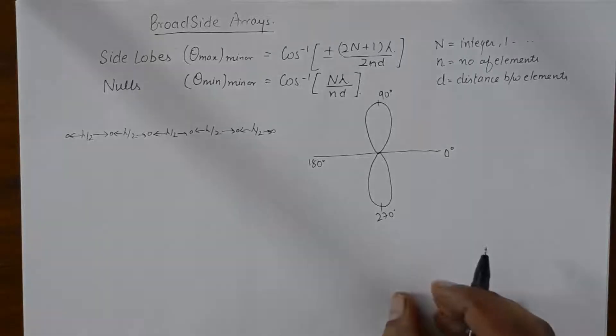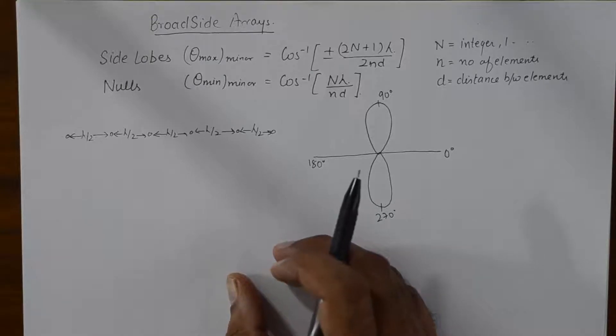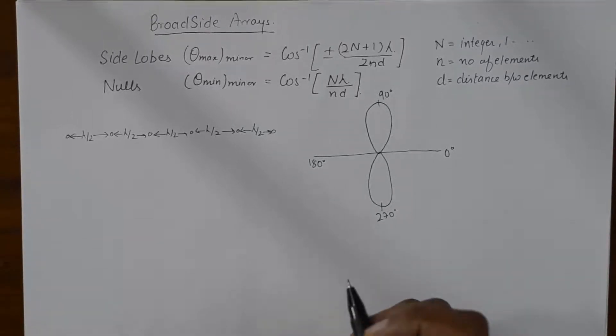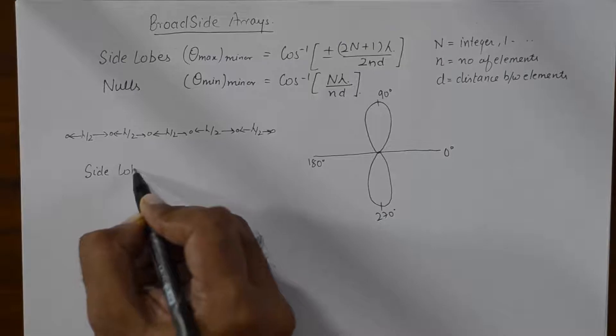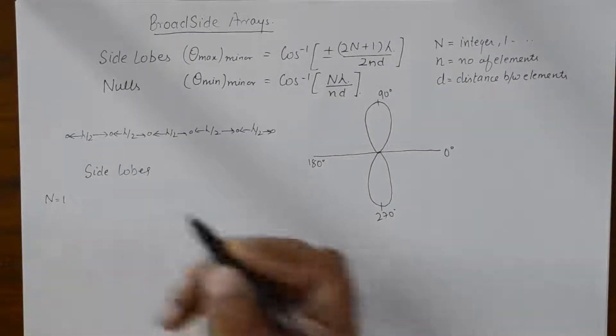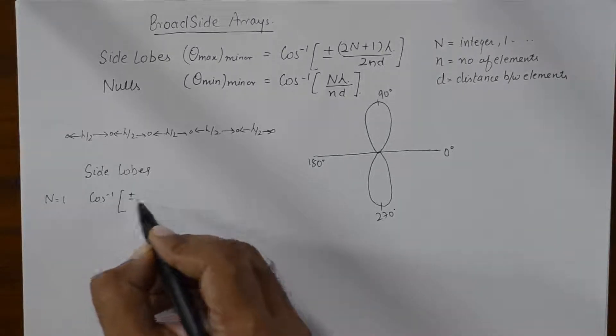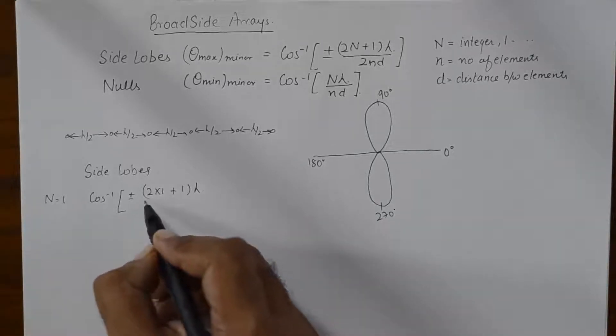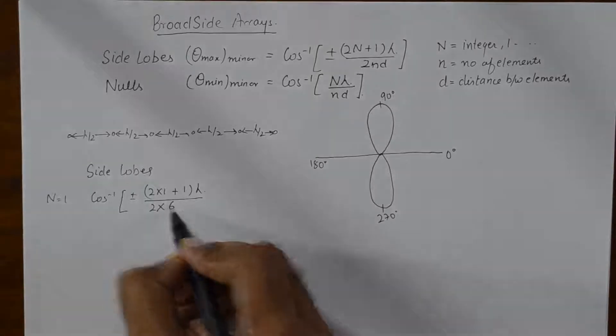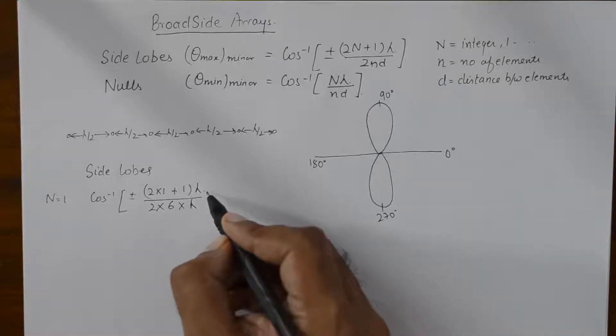Now, for example, in this case of six element broadside array, we will calculate side lobes first. For capital N is equal to 1, so we will calculate cos inverse, so this goes 2 into 1 plus 1 into lambda upon 2 into 6, which is the number of elements, into lambda by 2, which is the distance between the elements.